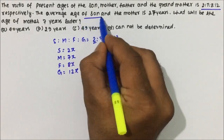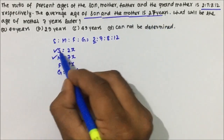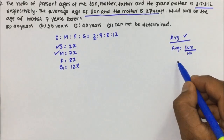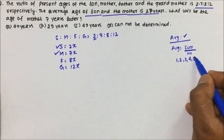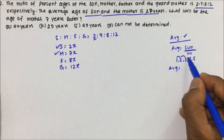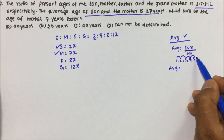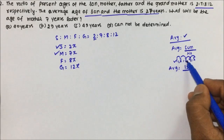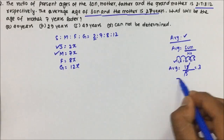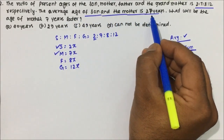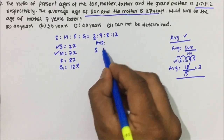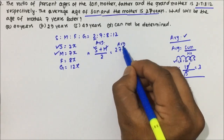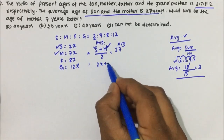The average age of son and mother is 27 years. Let's understand the concept of average: average = sum divided by number. For example, the average of 1, 2, 3, 4, 5 is (1+2+3+4+5)/5 = 15/5 = 3. So here, the average of son and mother is 27, which means (son's age + mother's age) / 2 = 27, i.e., (2x + 7x) / 2 = 27.